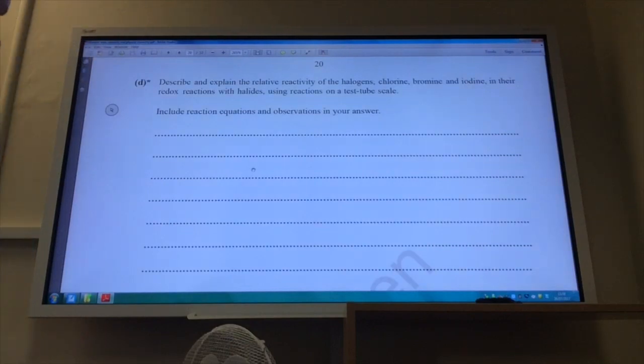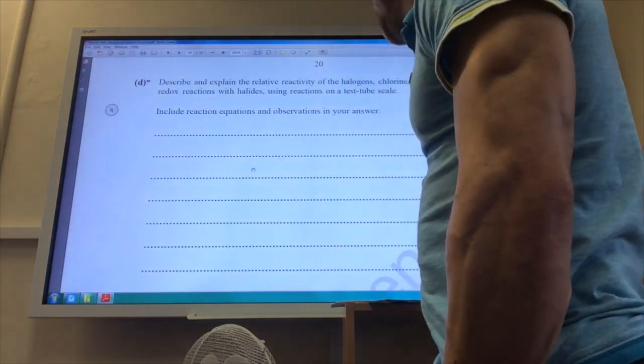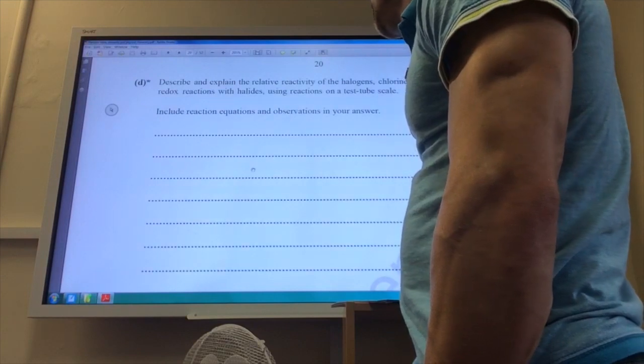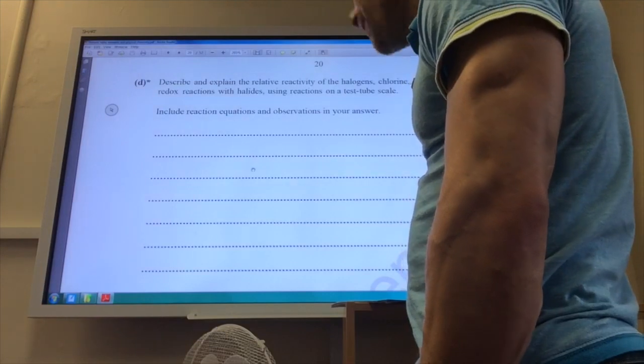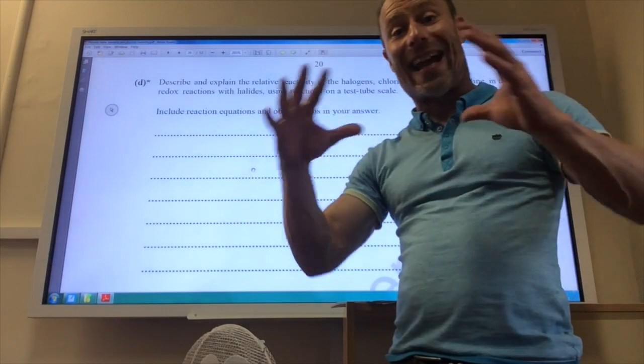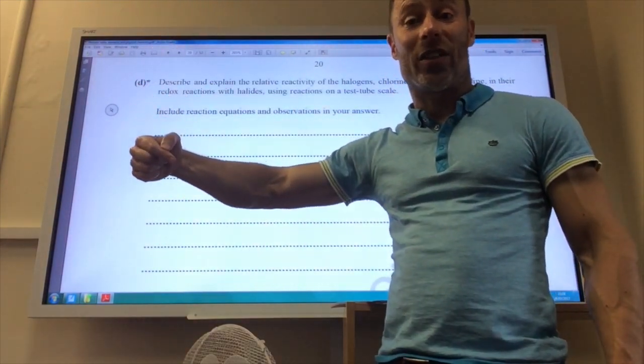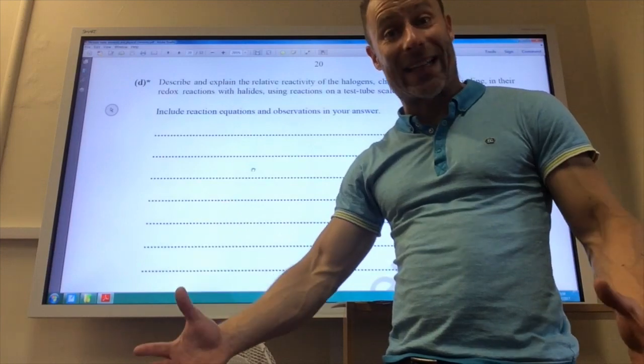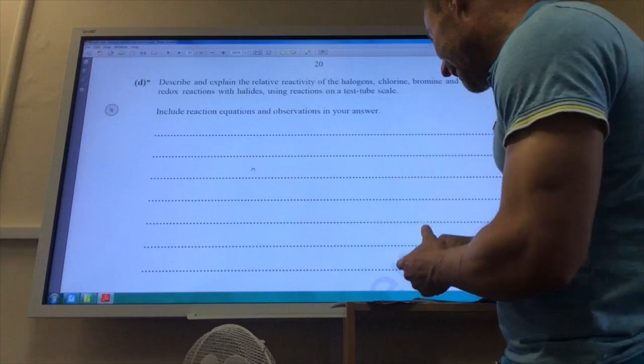So we're going to look at halogen displacement reactions now. Describe and explain the relative reactivity for halogens, chlorine, bromine, iodine, in their redox reaction with the halides, using reactions on a test tube scale, include reaction equation observations. OK, so first of all, the halogens get less reactive as you go down the group. That's because the atoms get larger as you go down the group. And so the incoming electron is entering a shell further away from the nucleus, and more shielded from the nucleus, and therefore is less attracted to the nucleus. So that's the explanation as to why reactivity decreases.